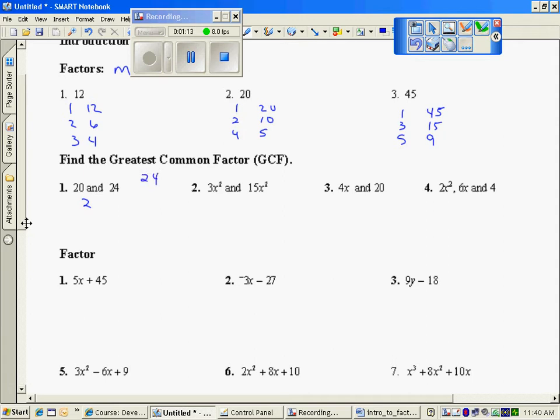and then thinking of 24 being 1 and 24, 2 and 12, 3 and 8, and 6 and 4, the largest one that goes into both 20 and 24 would not be 2. It looks like 4 goes into both 20 and 24. So again, we want the largest.